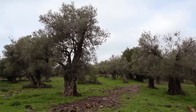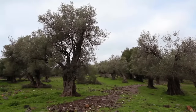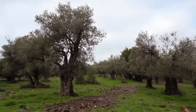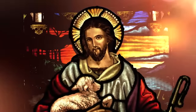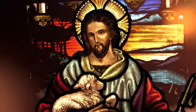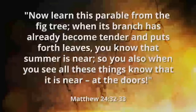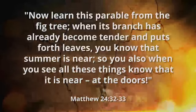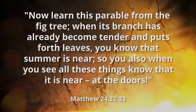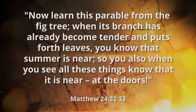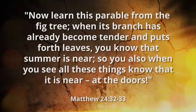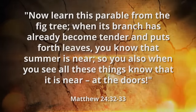Jesus often refers to the nature around him in order to help his followers understand deeper spiritual truths. In Jesus' discourse regarding the signs of his coming at the end of days, the book of Matthew records him saying: 'Now learn this parable from the fig tree. When its branch has already become tender and puts forth leaves, you know that the summer is near. So you also, when you see all these things, know that it is near at the doors.'